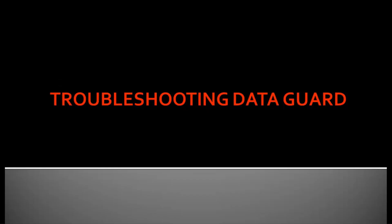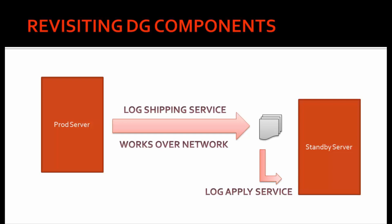We'll get inside the Data Guard troubleshooting steps and see how we can troubleshoot a Data Guard. Let us revisit the Data Guard components. We know that there is a production server, a standby server, and there is something called a log shipping service which works over the network. If there is an issue with the network, definitely your log shipping service won't work. There is also a log apply service, whose job is to apply all received archive logs from production to the standby server.